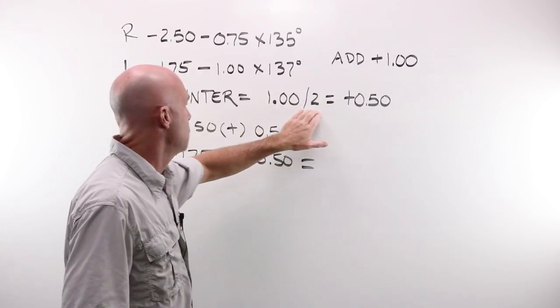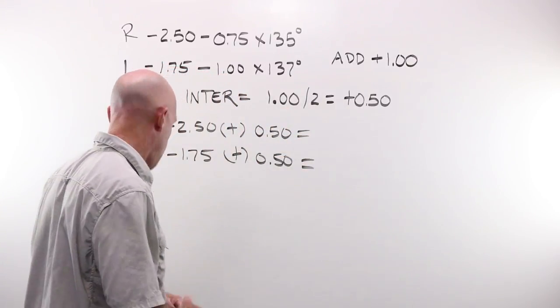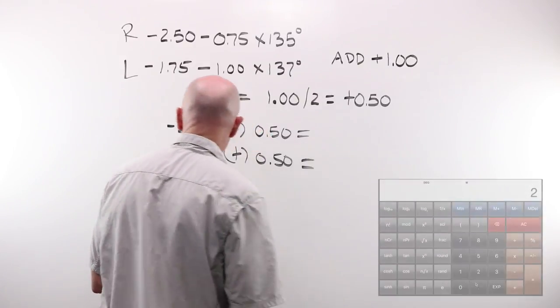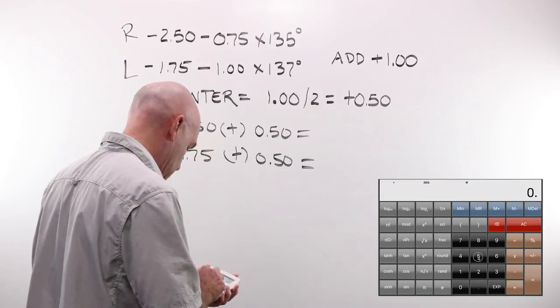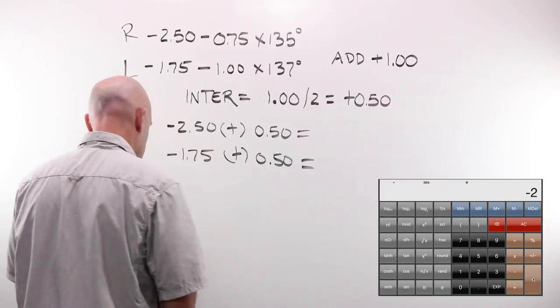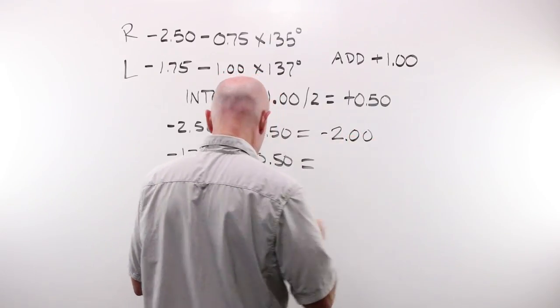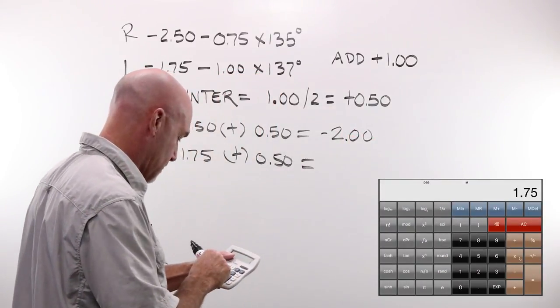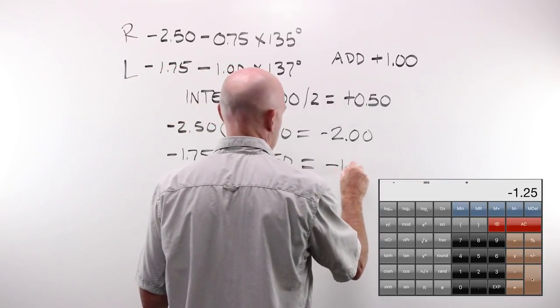Our add is 1.00. 1 divided by 2 gives us a +0.50 added to our spherical power. What is that? I've got -2.50 plus 0.50, that gives me -2.00. And I've got -1.75 plus 0.50 is -1.25.